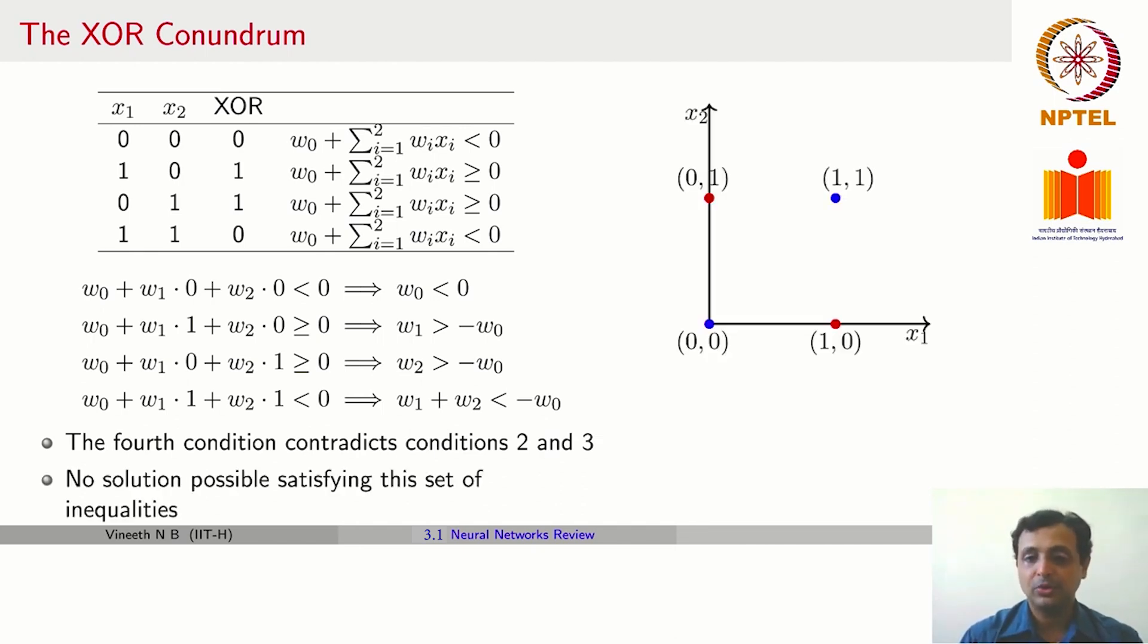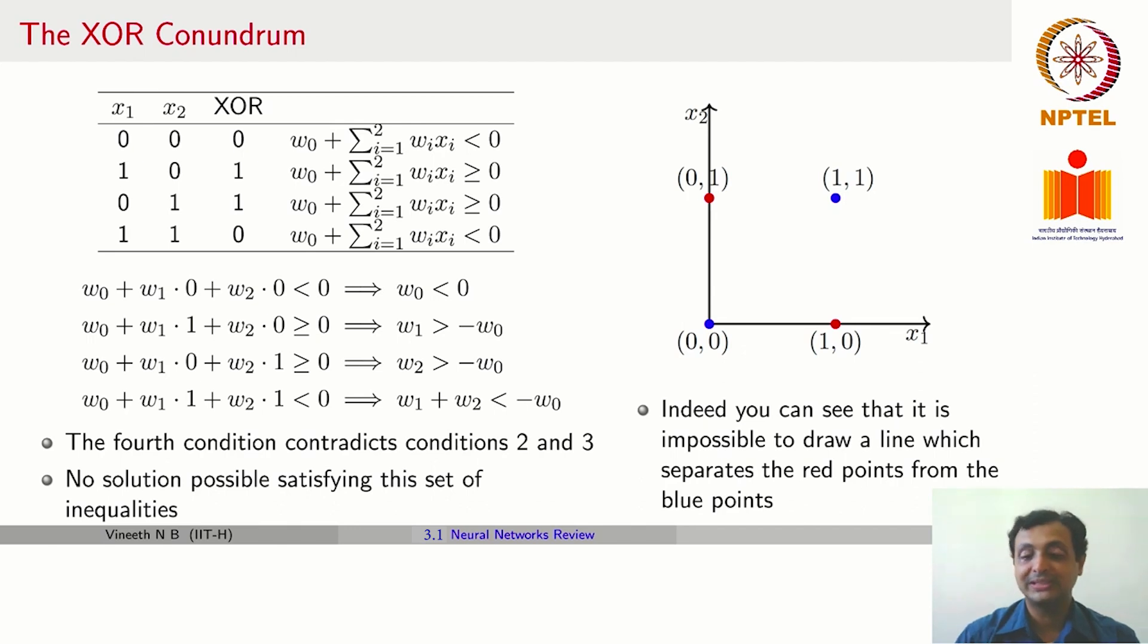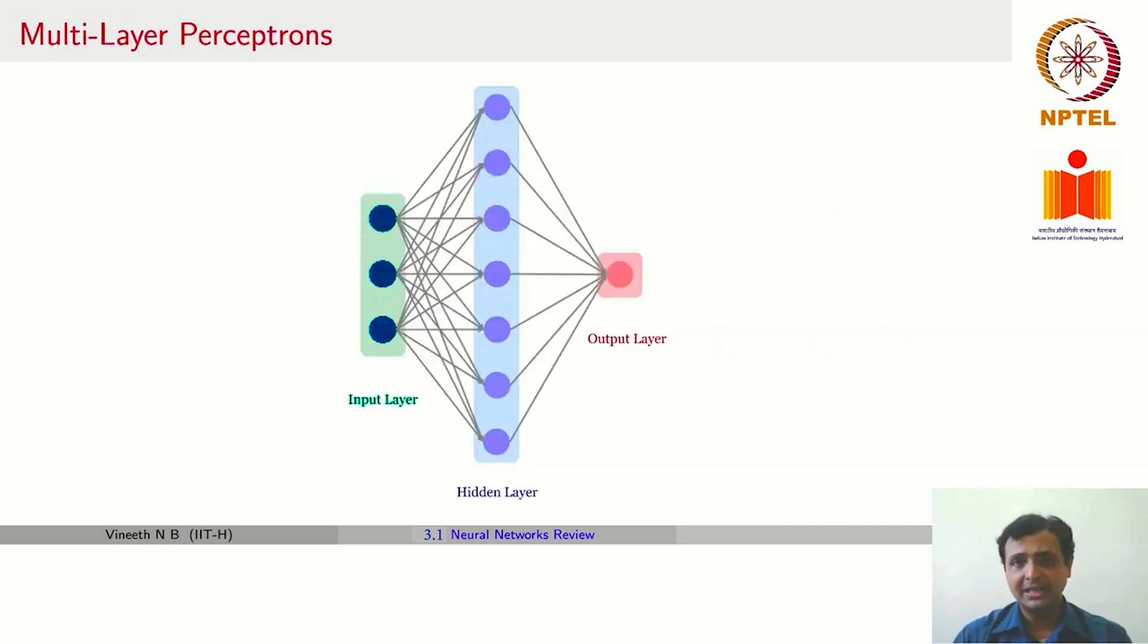Also visually speaking, you have the XOR problem where you want these two elements (0,1) and (1,0) to have a label 1, and elements (0,0) and (1,1) to have a label 0. As we said, a perceptron simply embodies a line. It is impossible to draw a line which separates the red points from the blue points, which leads us to the concept of a multi-layer perceptron.